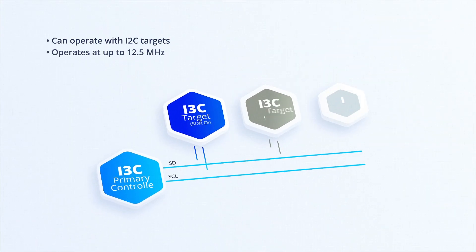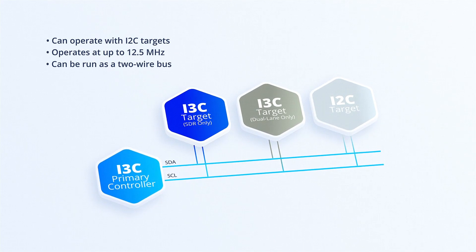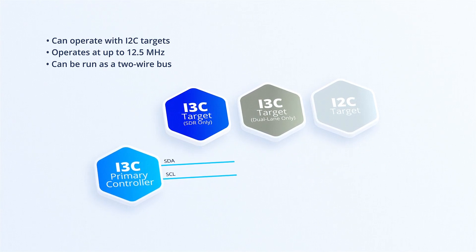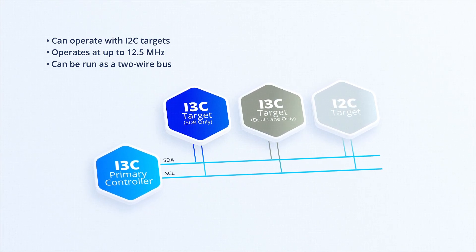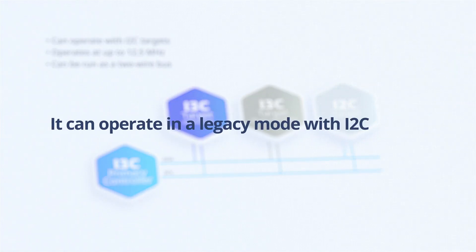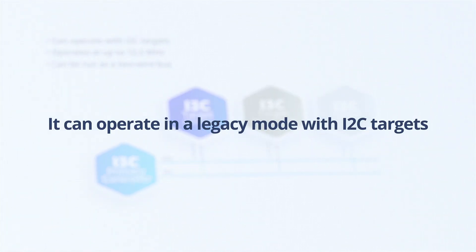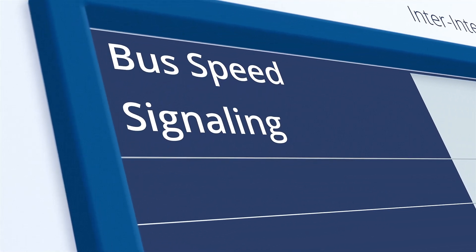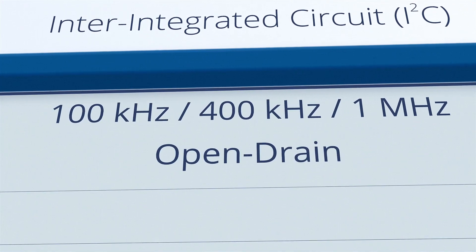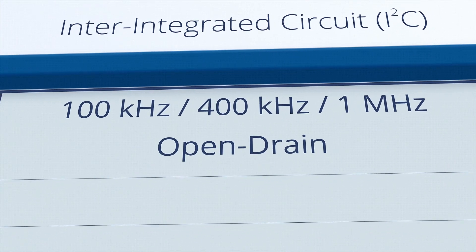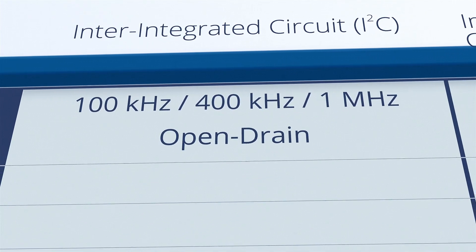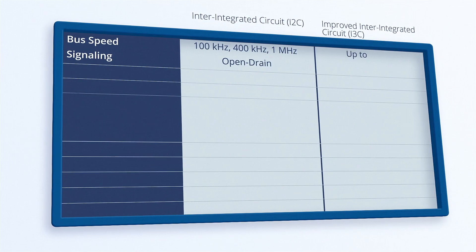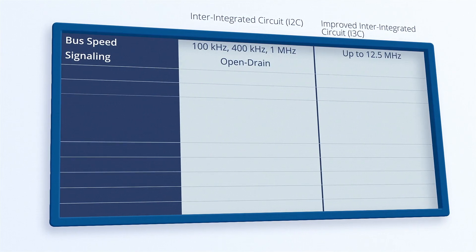Like i2C, i3C can be implemented as a two-wire bus, although there are notable electrical changes between the buses. Since i3C has a similar structure to i2C, it can operate in a legacy mode with i2C targets. The most significant difference between i2C and i3C is bus speed. i2C is usually run at 100 kHz, 400 kHz, or 1 MHz, whereas i3C can reach clock speeds of up to 12.5 MHz.